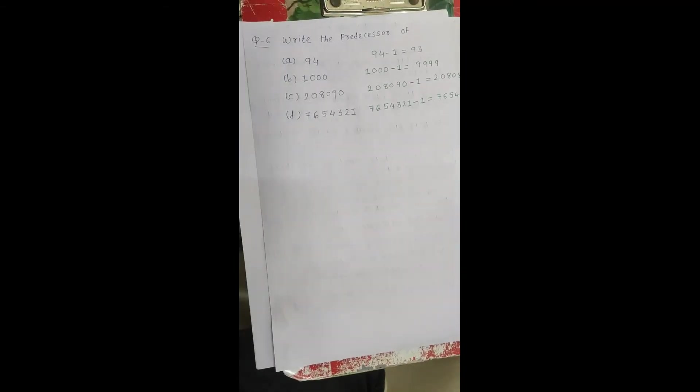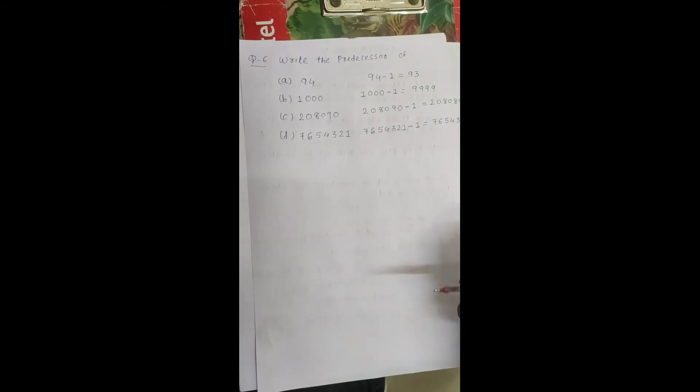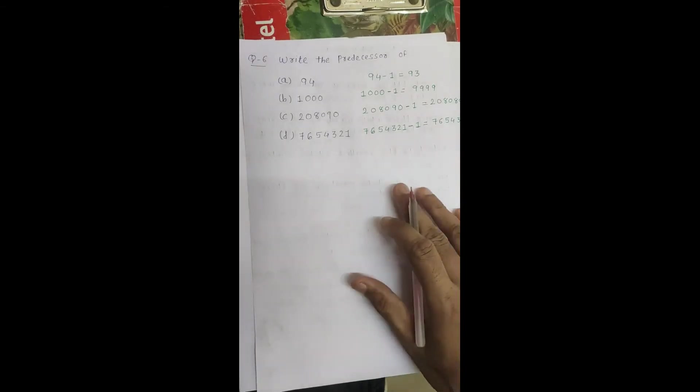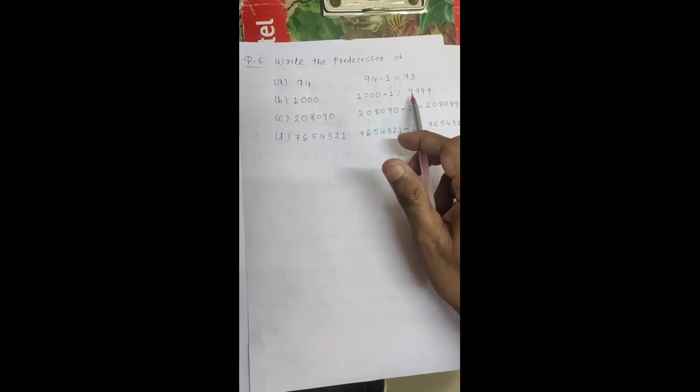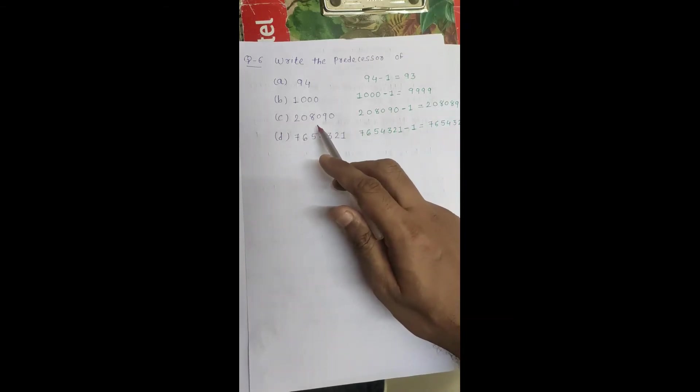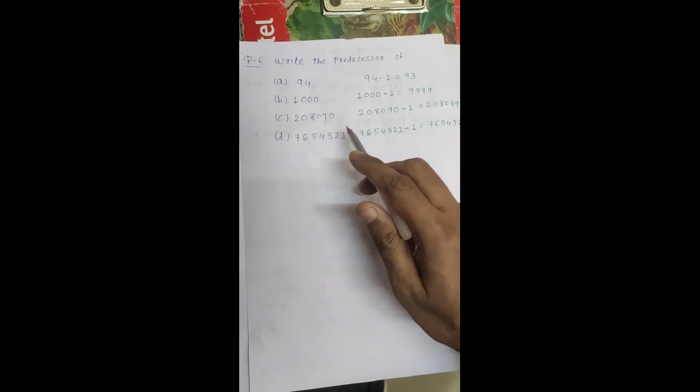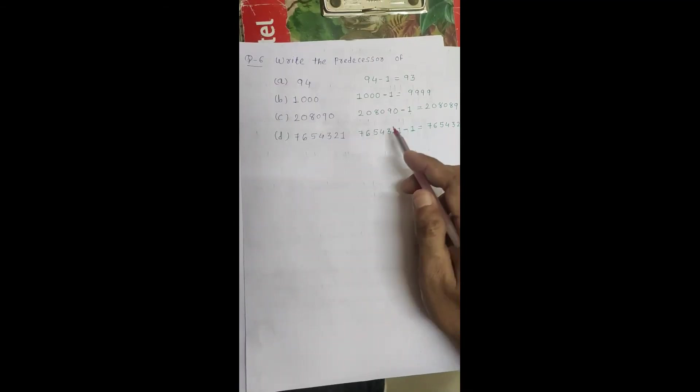Question number 6: we have to write the predecessor. We know that if we subtract 1, we get the predecessor. Here it is 94 minus 1. Another is 1,000. Another is 9,999. Here it is 2,080,90. If we subtract 1 from the last number, we will get the predecessor.